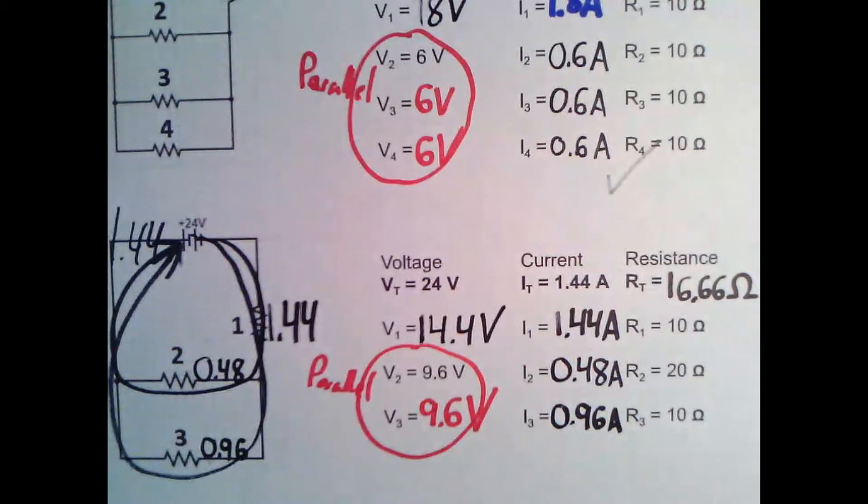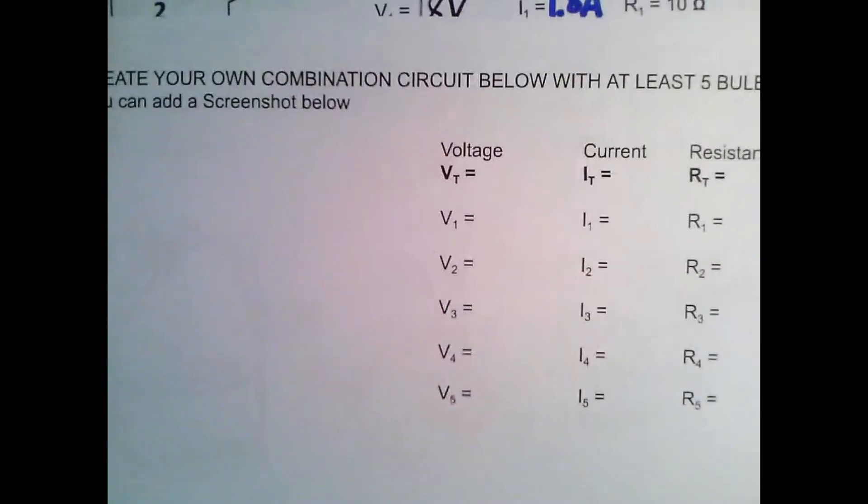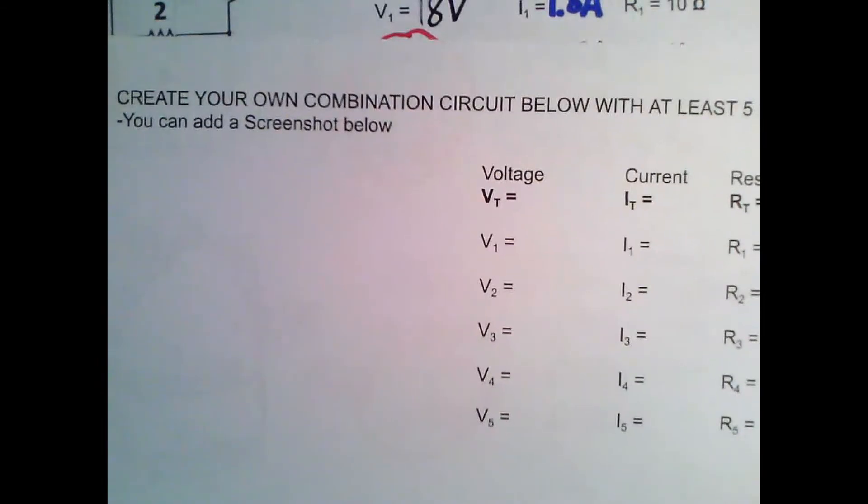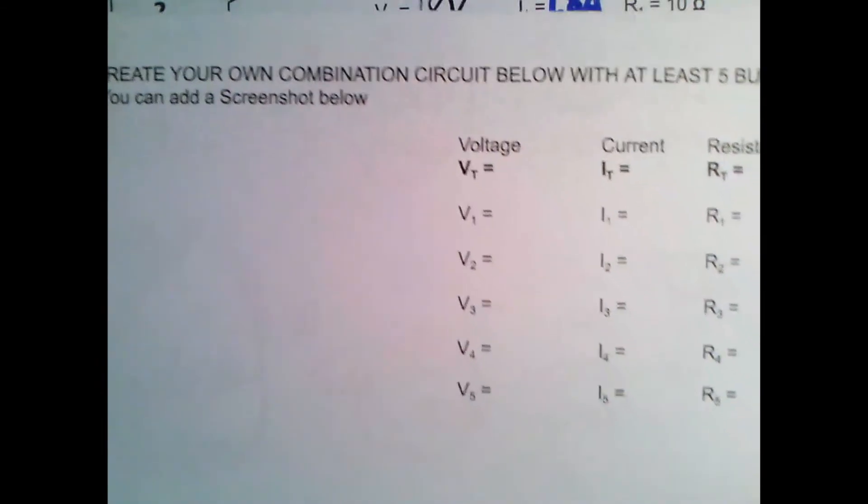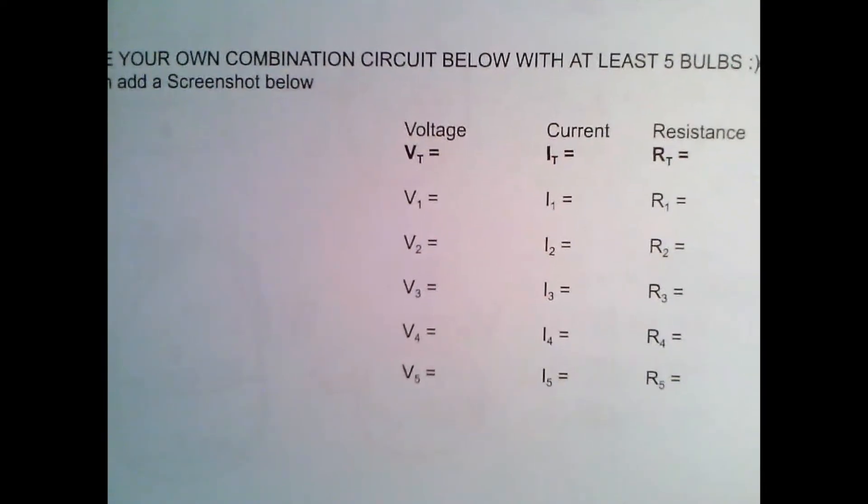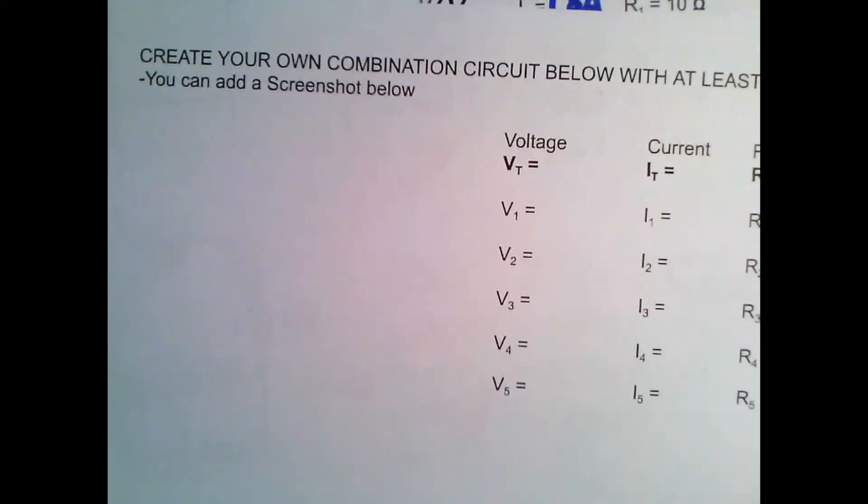So what you're going to take a look at for your homework is you have an activity to try. You have a little worksheet very similar to last time, but now all the circuits are combination. And then at the very end, you're going to attempt to design your own. So at the end of that worksheet, it says, make your own combination circuit below with at least five different bulbs and take a little screenshot.